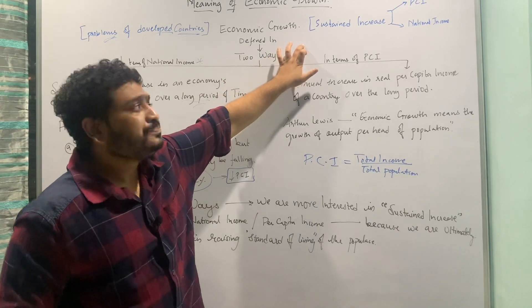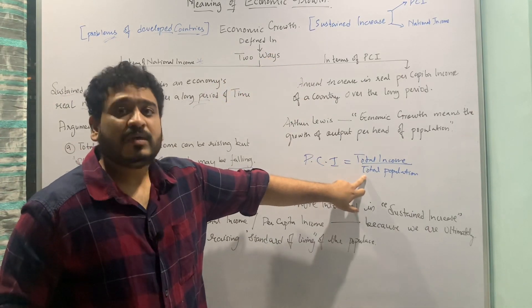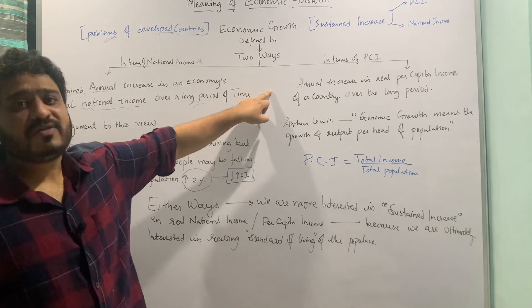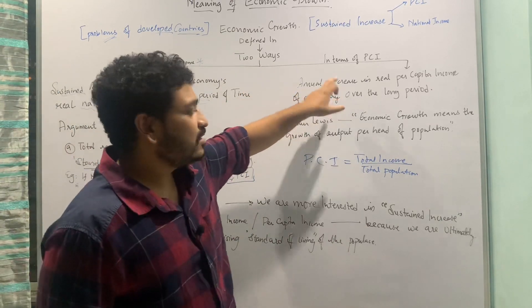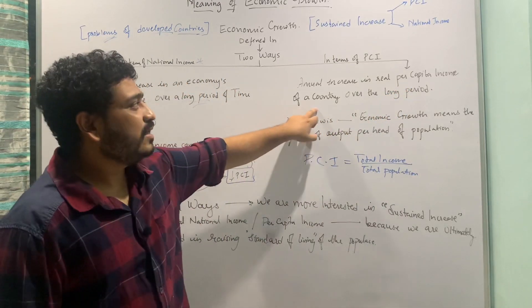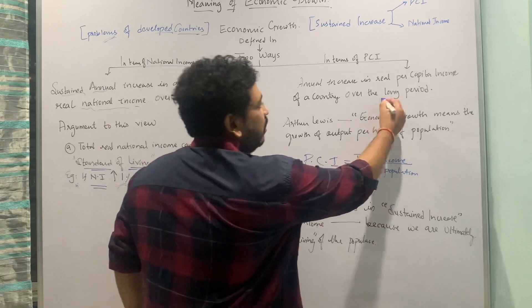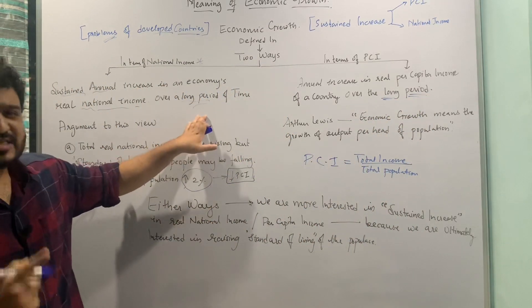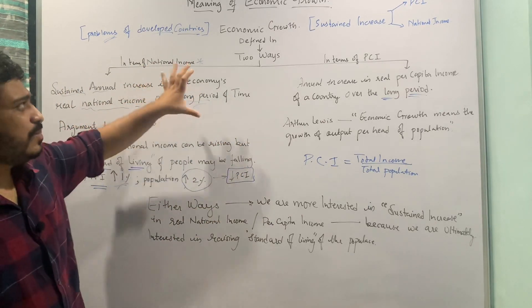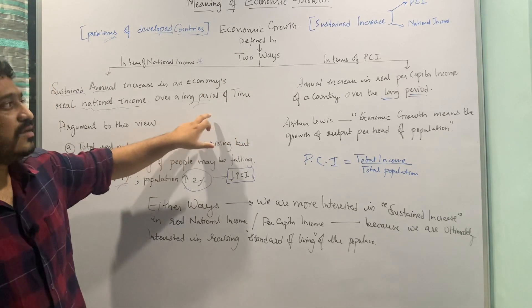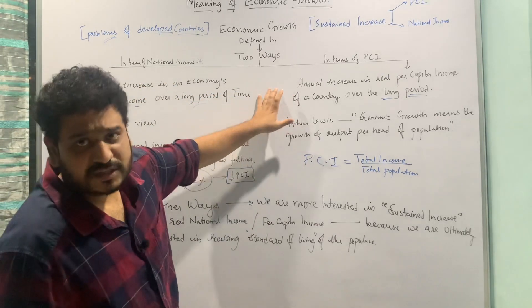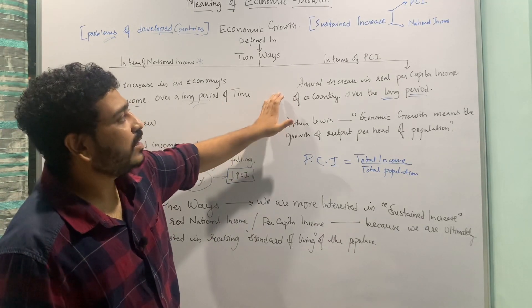Therefore, we have another way to define economic growth — in terms of per capita income, which takes population into account. The definition of economic growth in terms of per capita income is: annual increase in real per capita income of a country over a long period of time. Note that any short-term spike cannot be termed economic growth; you must have sustained growth over a longer period of time.